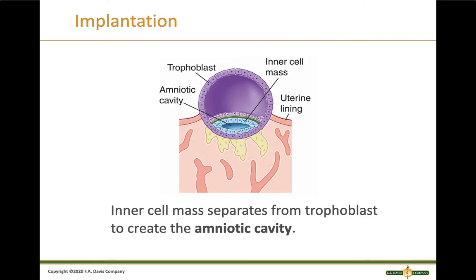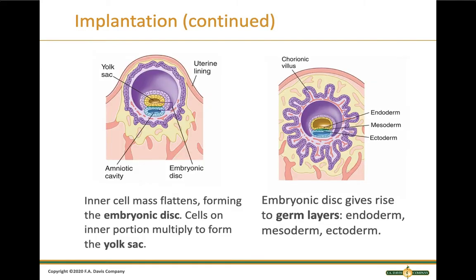This shows implantation happening and the inner cell mass separating from the trophoblast to create the amniotic cavity. The inner cell mass flattens to form what's called the embryonic disc, and some cells form the yolk sac. The embryonic disc gives rise to the germ layers — the endoderm, mesoderm, and ectoderm — which will become all of your organs.